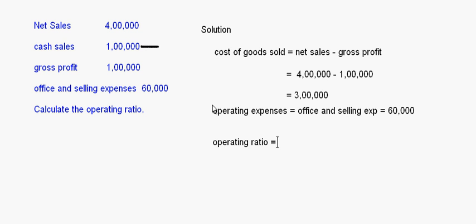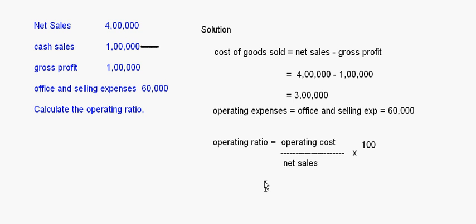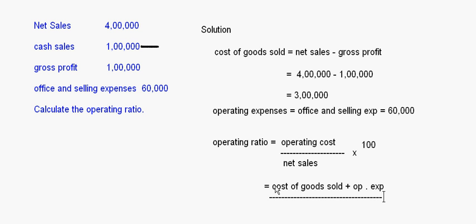So the operating ratio will be equal to operating cost upon net sales into 100, which is cost of goods sold plus operating expenses upon net sales into 100. The cost of goods sold is three lakhs and the operating expenses is sixty thousand.